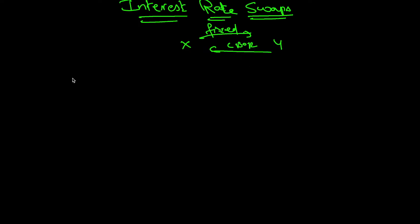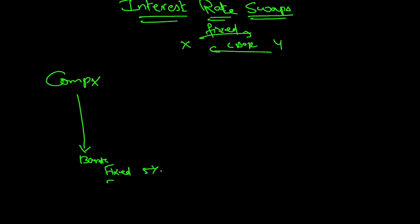Say for example, Company X is in need of a loan and is approaching a bank. The bank is offering two types of loan: one is fixed at 5%, and floating at LIBOR. So this is a typical loan transaction between Company X and the bank, with Company X approaching for a one million dollar loan.